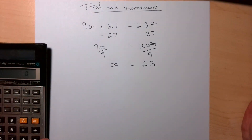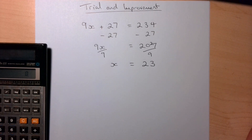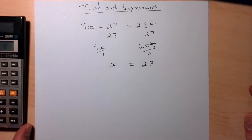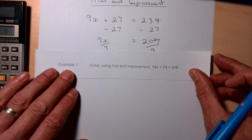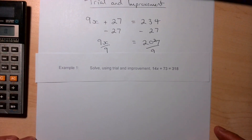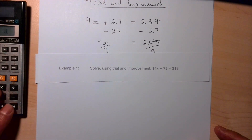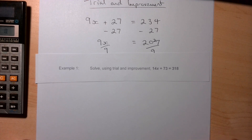If the question says use trial and improvement, you must use this method because you get marks for showing it. Setting out is the key, and the best way to do it is to draw a table. You'll need your calculator ready because we've got a few calculations to do. The first example is: solve using trial and improvement — 14x + 73 = 318.